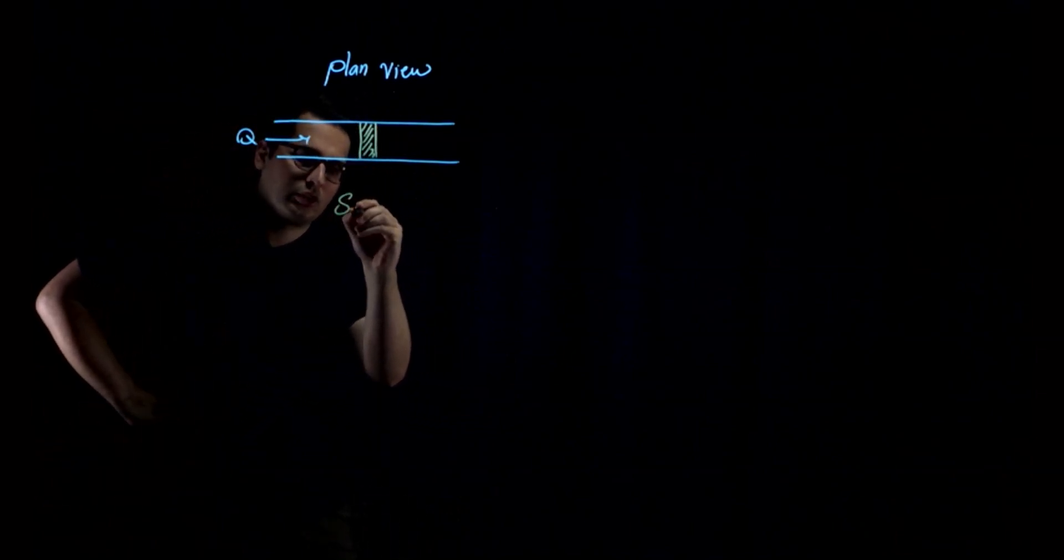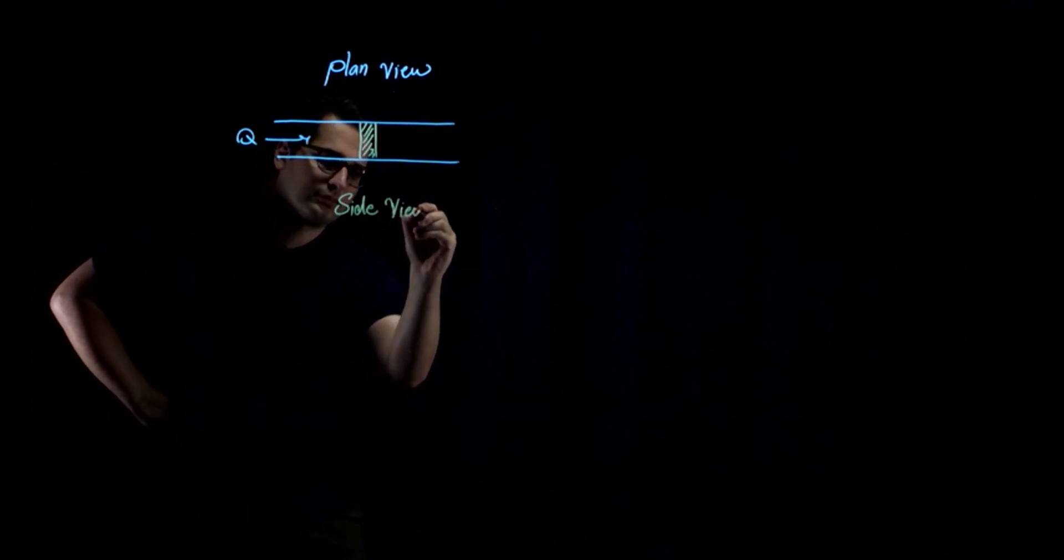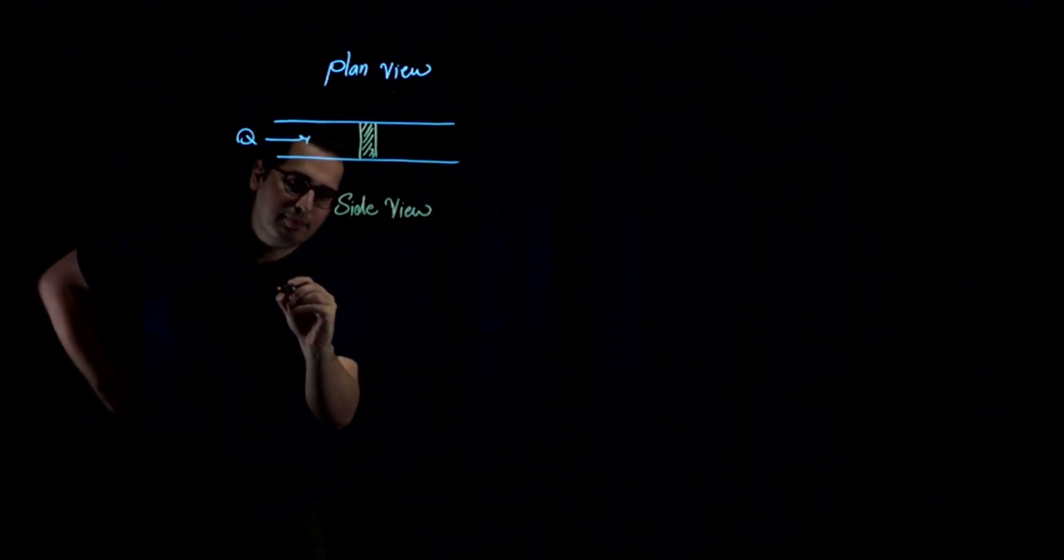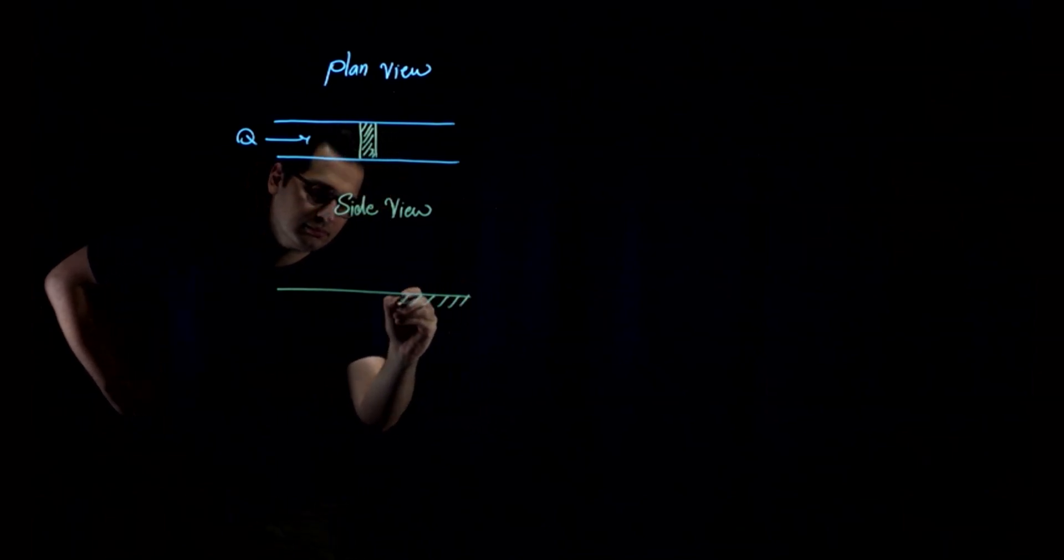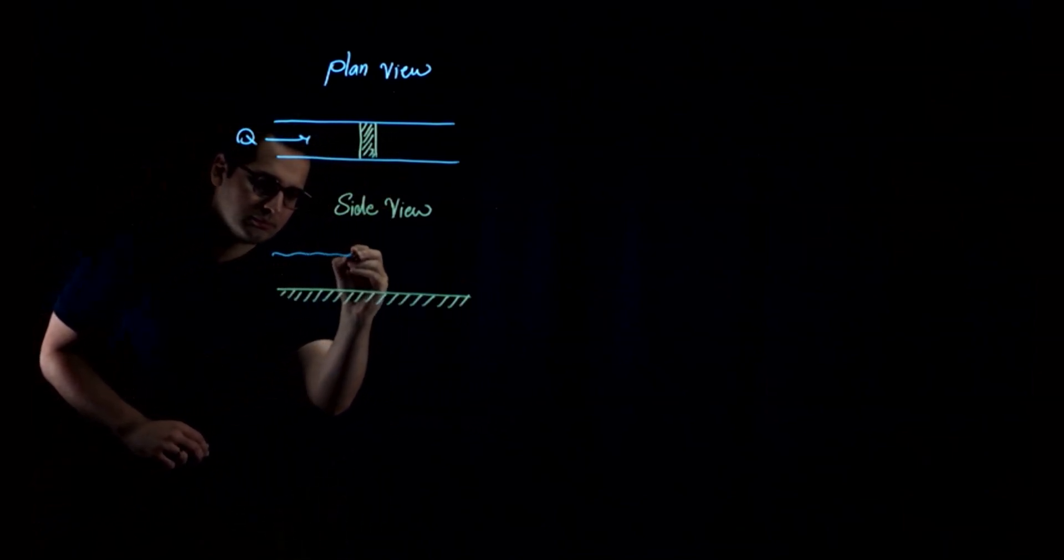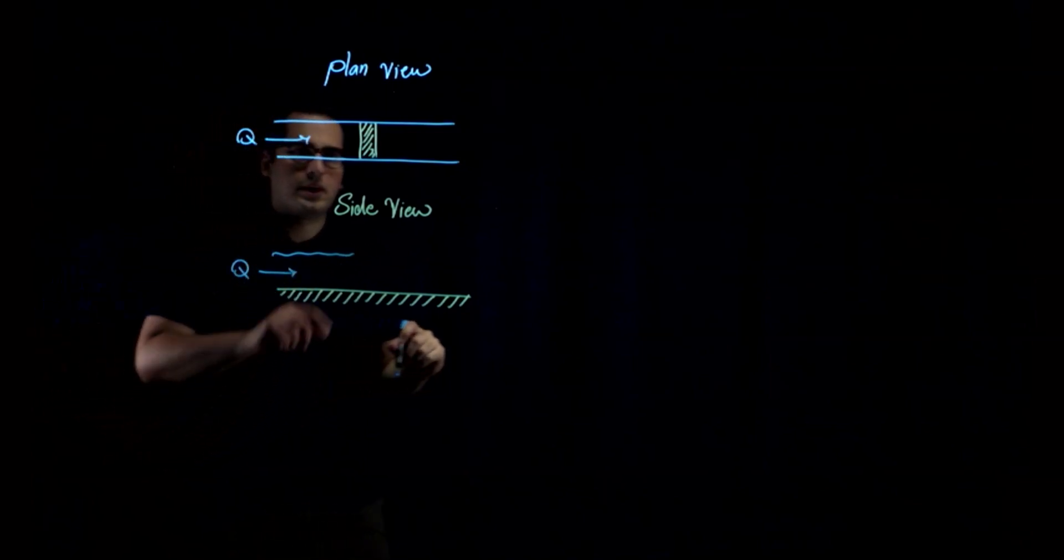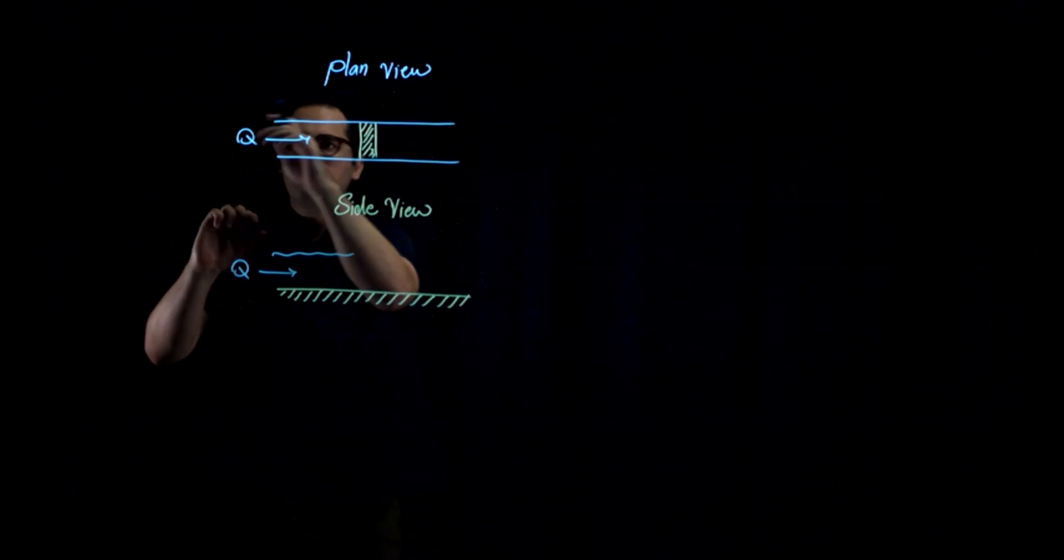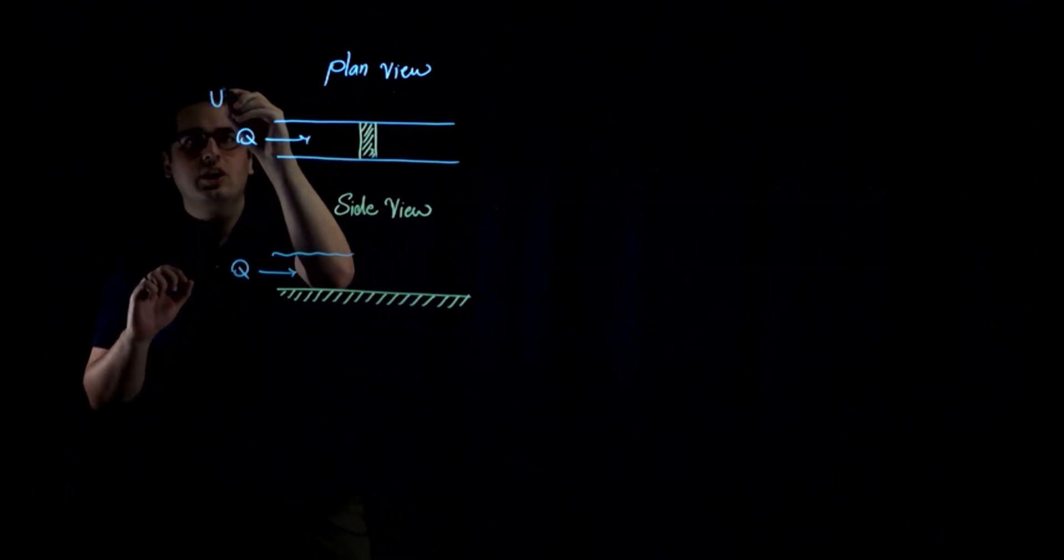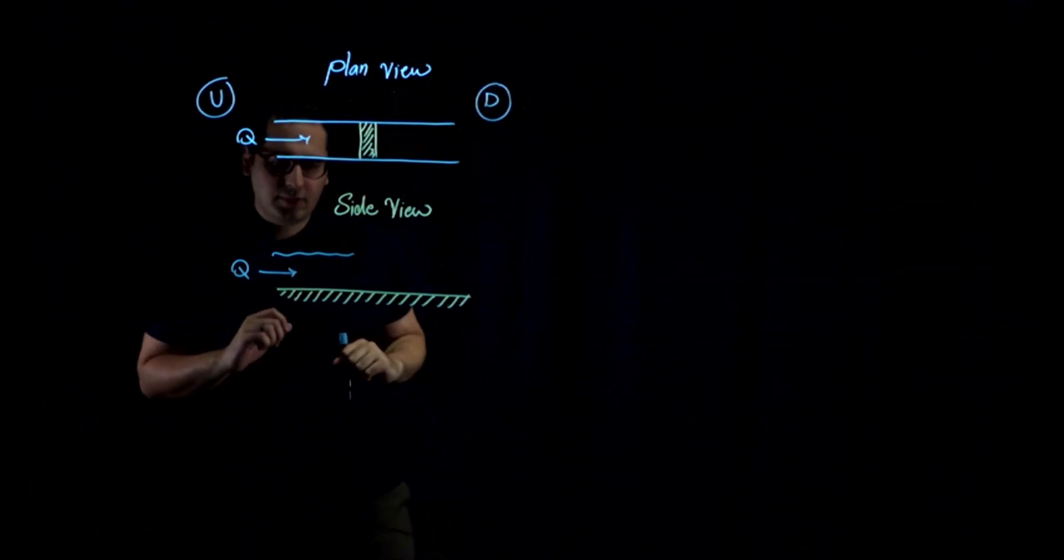So I'm going to show you the cross-sectional view or side view over here. Here, this is the bed of the channel, and this is the depth of water. Flow is in this direction, and by the way, when you have the weir over here, upstream is this section. This is upstream, and after weir, you have your downstream.